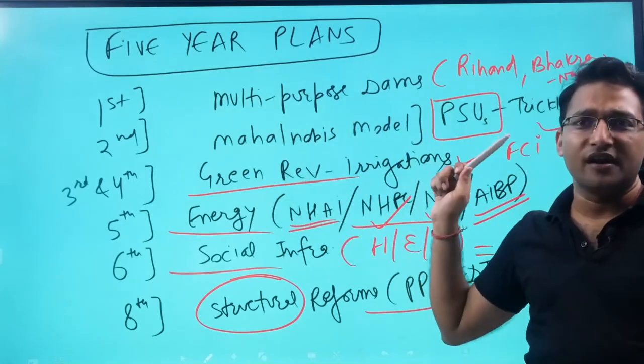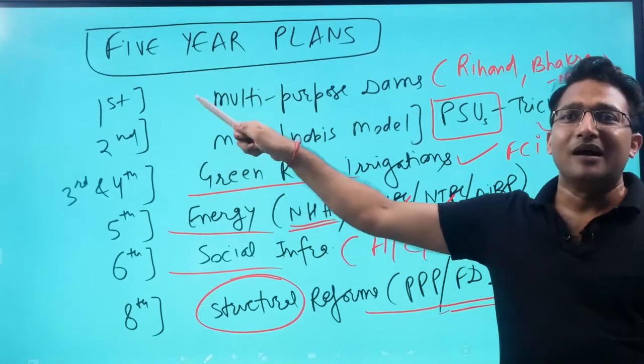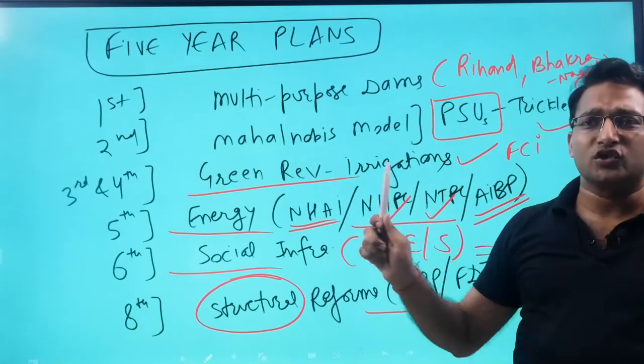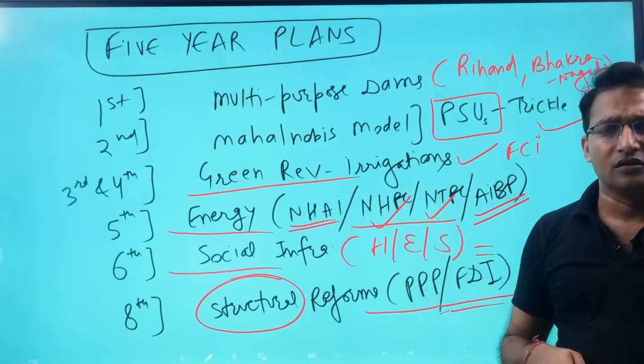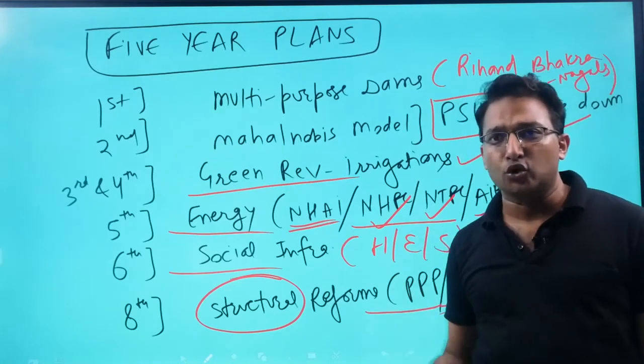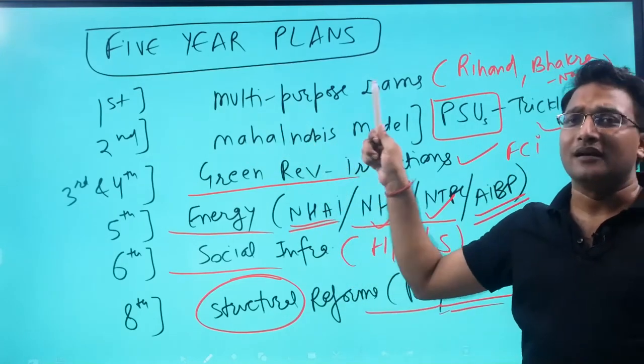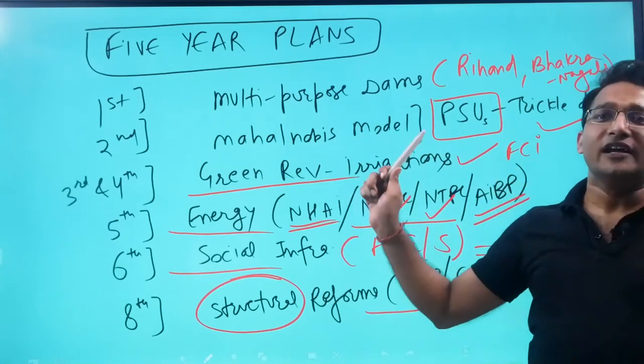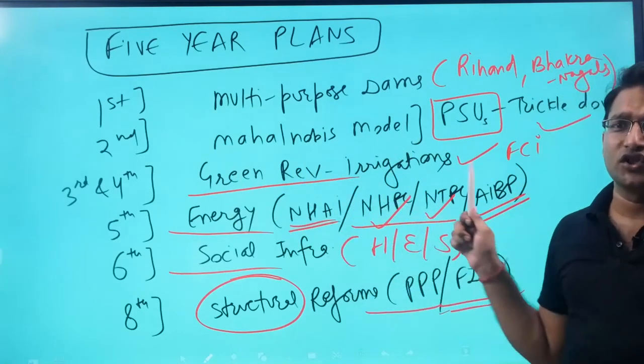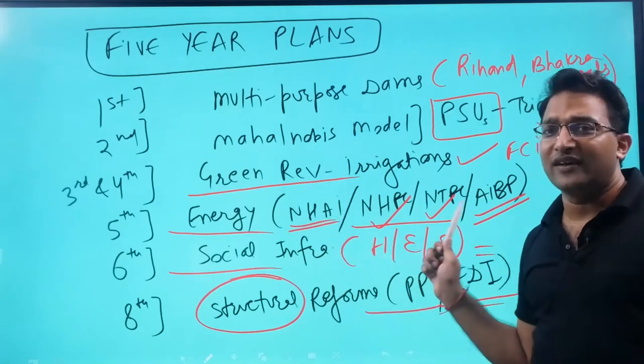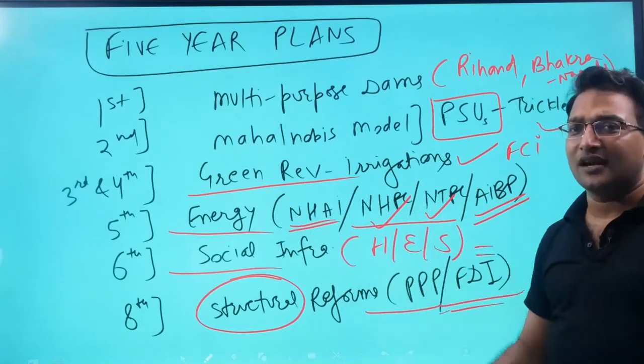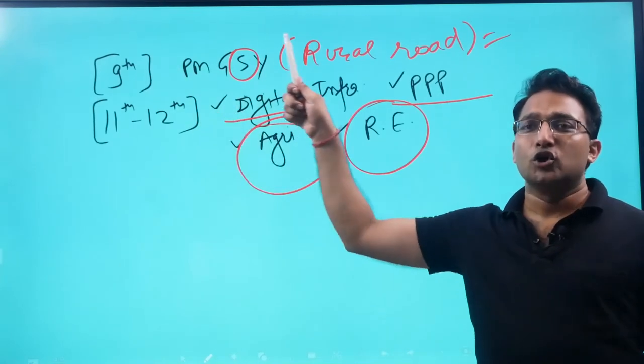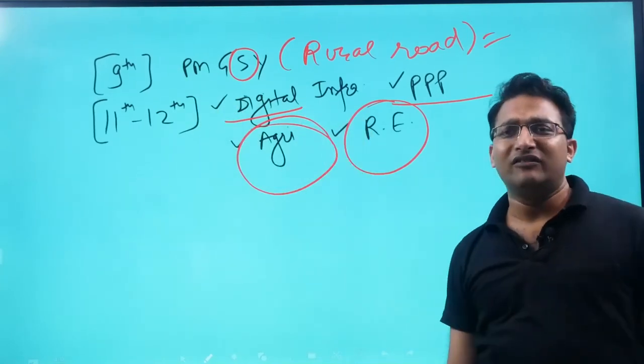In the second five-year plan, the Mahalanobis model gave more power to PSUs and followed a trickle-down approach. The third and fourth plans focused on green revolution and irrigation with FCI. The fifth plan emphasized energy infrastructure, the sixth plan social infrastructure, the eighth plan introduced structural reforms for PPP and FDI, the ninth plan focused on rural roads, and the eleventh and twelfth plans addressed digital infrastructure and renewable energy.